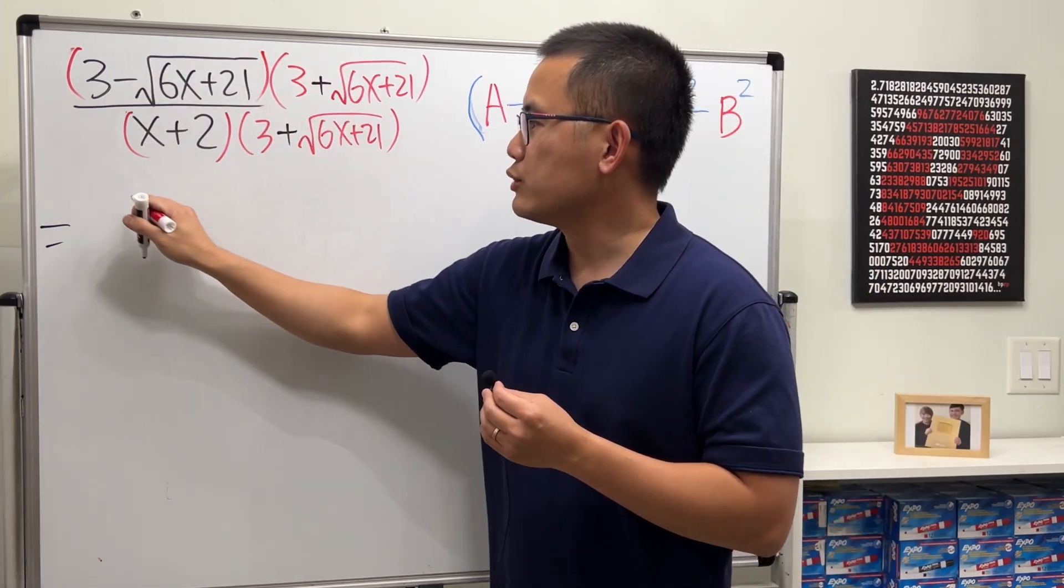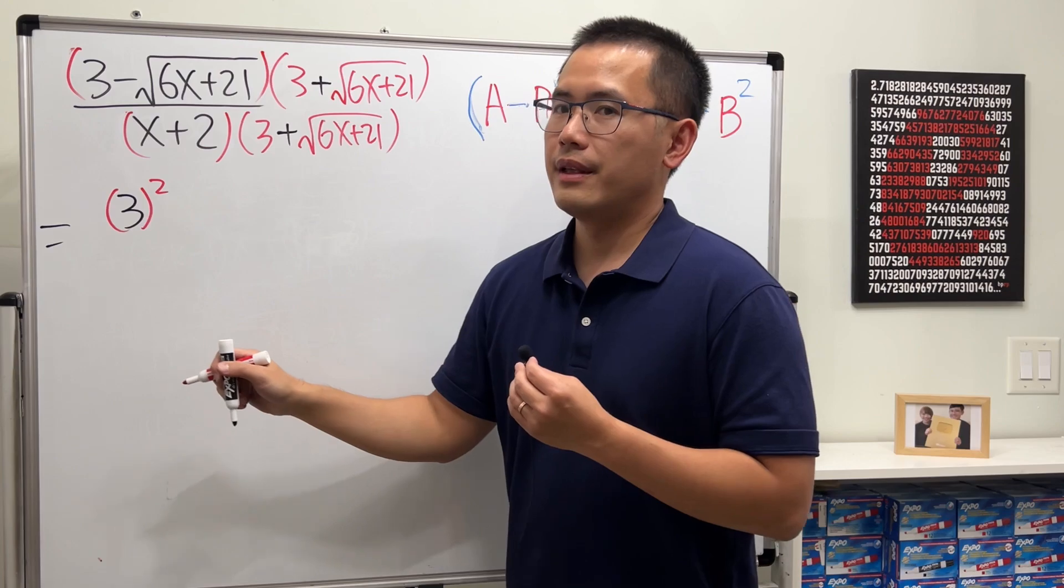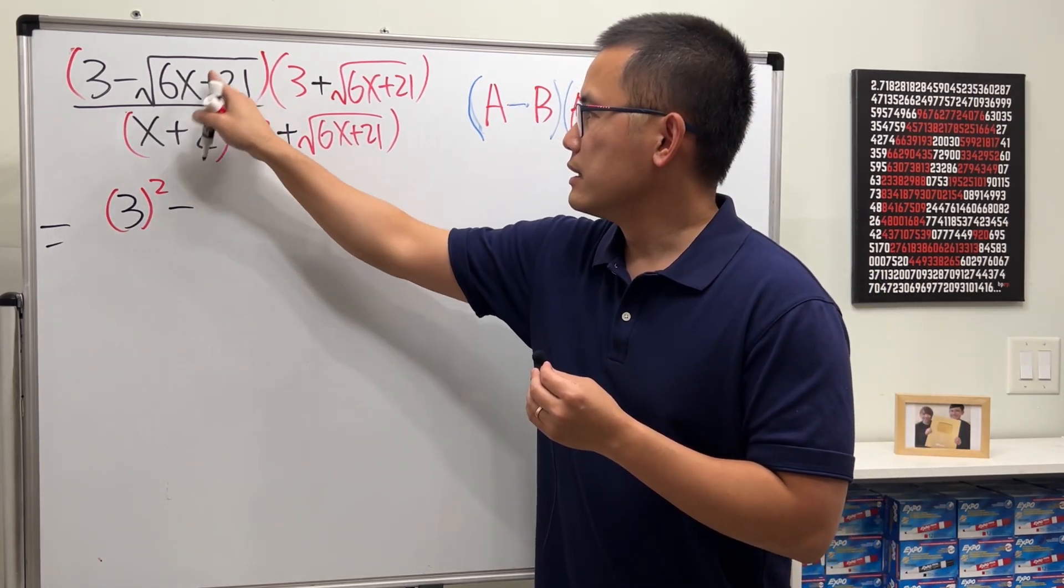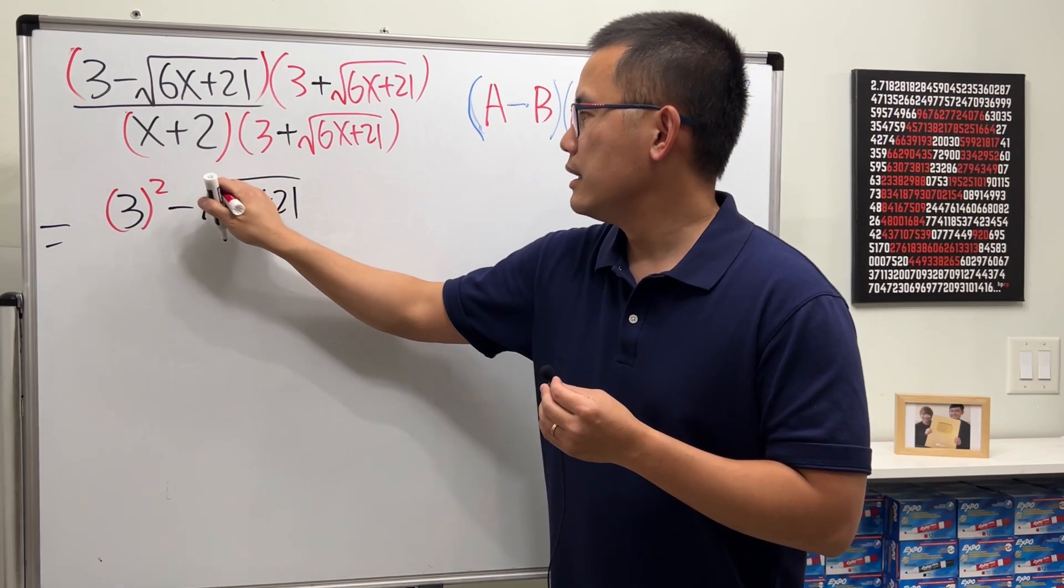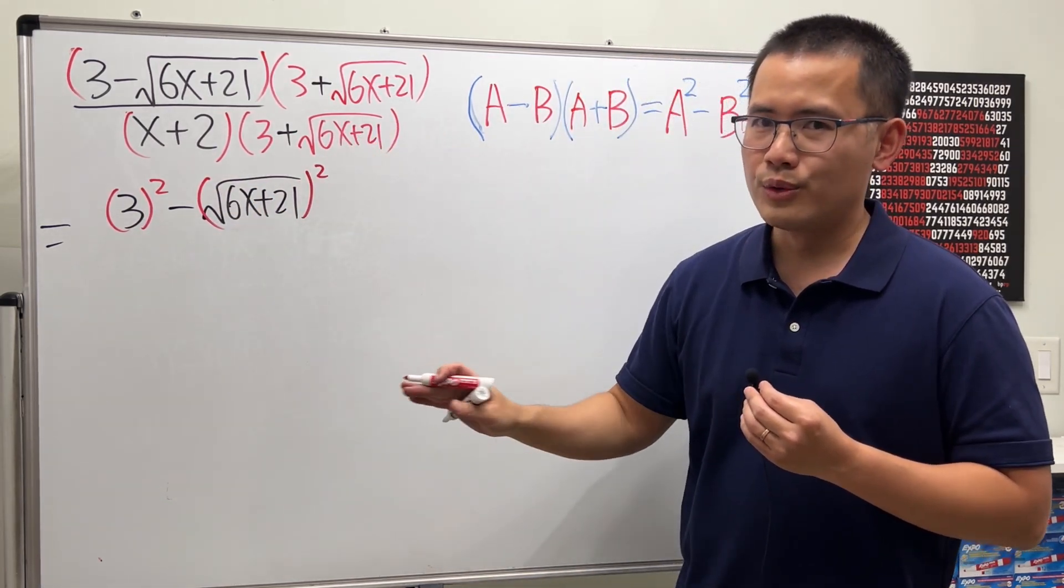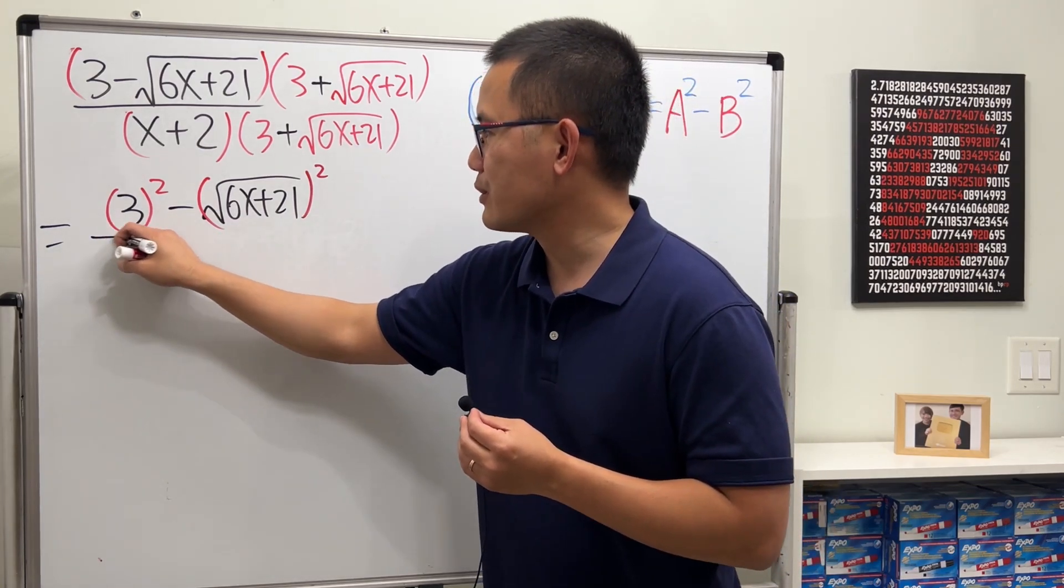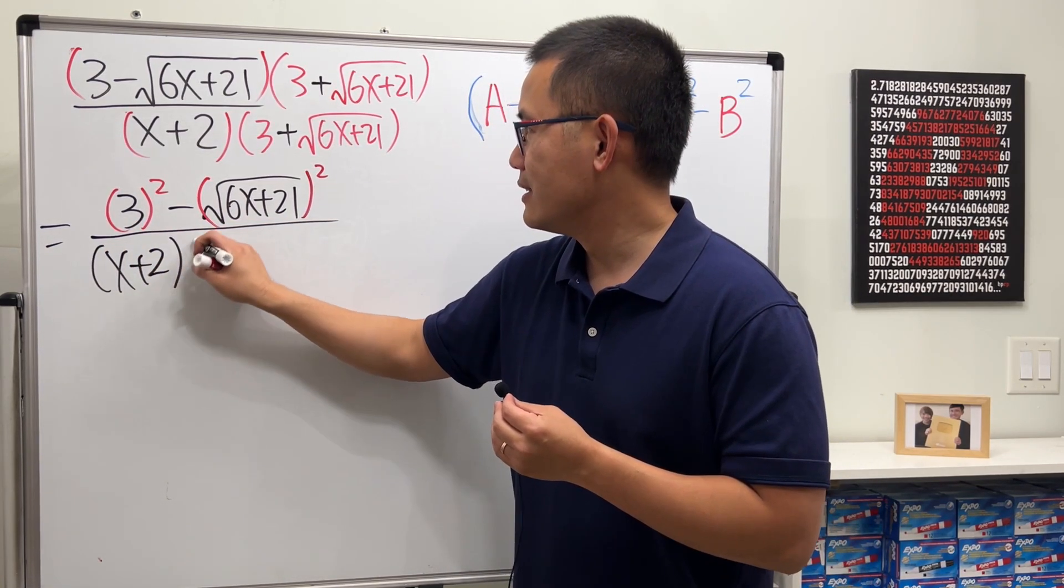So multiply out the top, we get 3 squared. Let me write it down like this, and then minus the second thing squared, so square root of 6x plus 21 squared. For the bottom, don't multiply it out, just leave it as how it is. That's how it usually works. So let's just write it down.